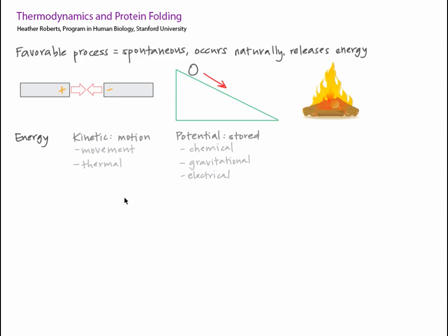Energy comes in many forms, which can be categorized into either kinetic energy or potential energy. Kinetic energy is the energy of motion, which includes thermal energy. Potential energy is stored energy, which includes chemical potential energy, gravitational potential energy, and electrical potential energy. All energy is defined as the ability to do work. A high energy person might be lifting, kinetic, or able to lift, potential, a lot of weight. And a high energy molecule might be able to initiate a reaction.